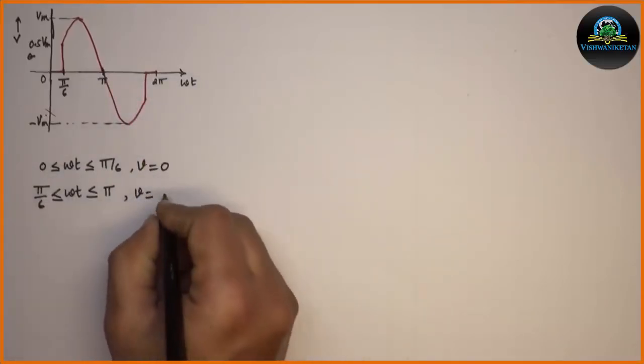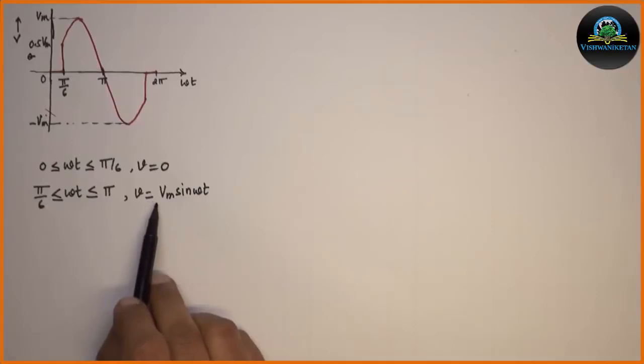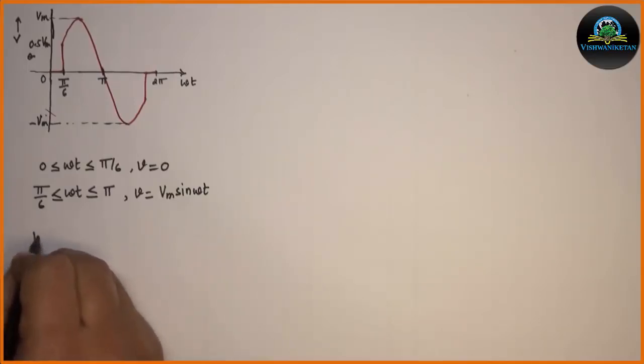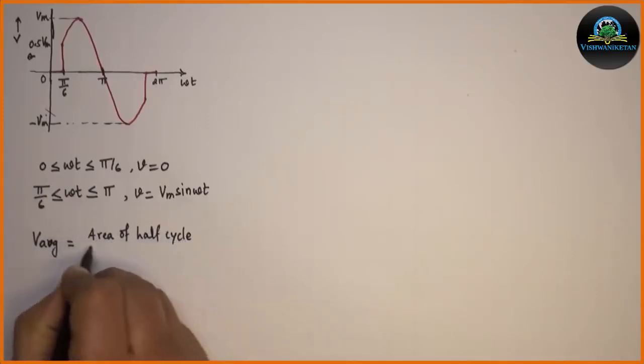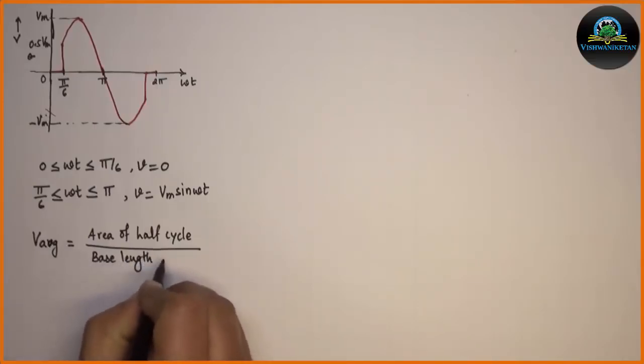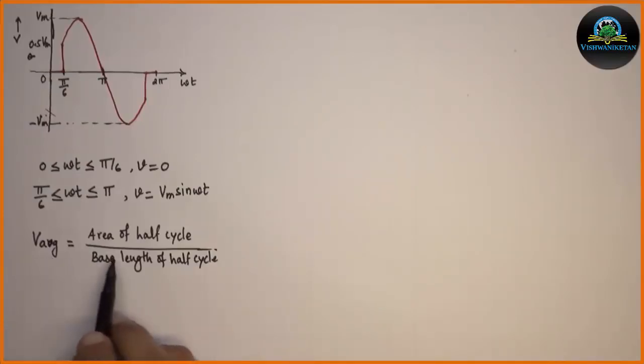From the formula of average value we get V average is equal to area of half cycle divided by base length of half cycle.